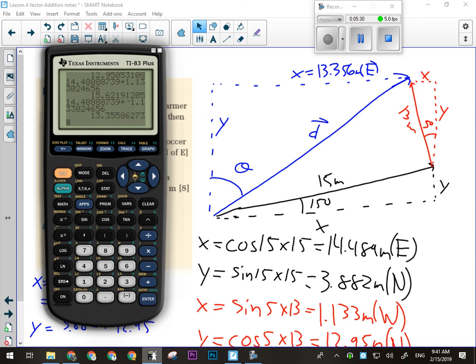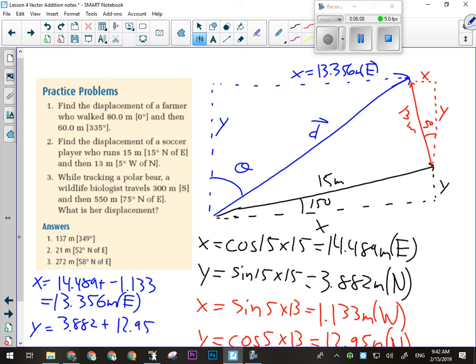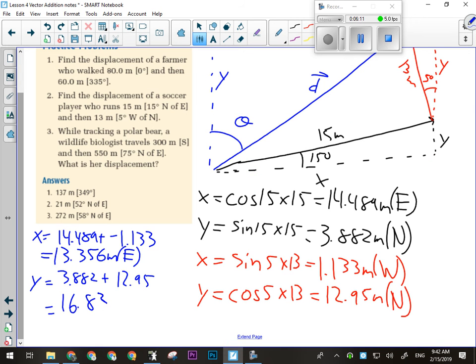I lost my number there, so I'll have to do it again. I'm just gonna redo those two calculations. Cos of five times 13. So my overall y component is 16.833 meters. And that is north. Is everybody with me there? Getting around the same numbers? Not around exactly the same numbers.